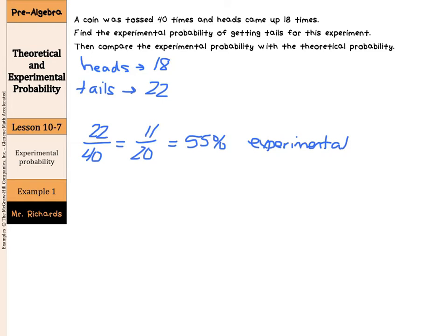Now, how does that compare to the theoretical probability? Well, in theory, we should be getting tails one half of the time. And if we wanted to write that out of 20, we could, 10 out of 20, which is a 50% theoretical probability.